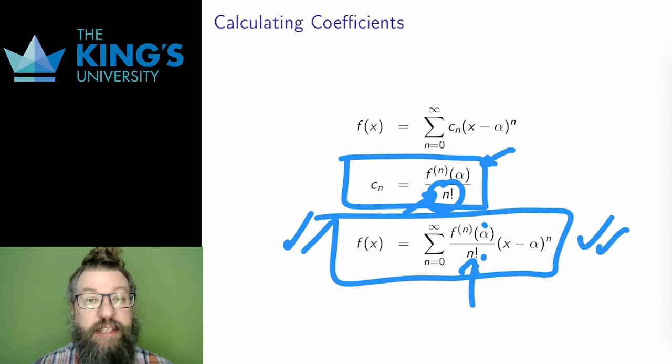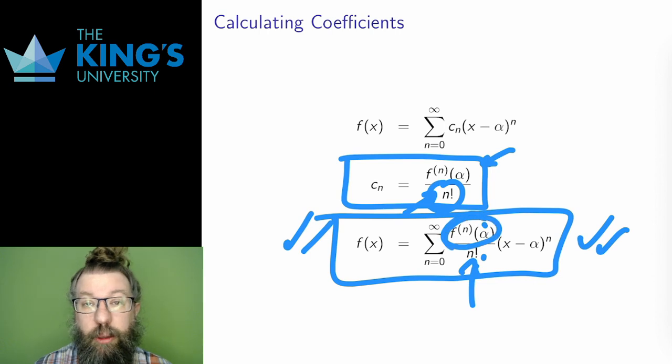This also provides an algorithm to calculate a Taylor series. I need to find a pattern of the derivatives. I need to evaluate them at the center point, and I need to put that pattern into this sum notation. I'll give some examples of that process in the next video.